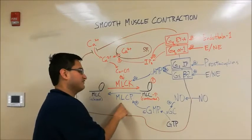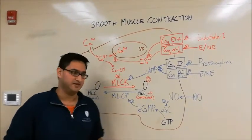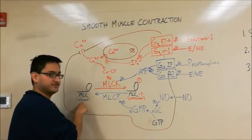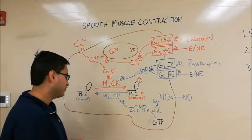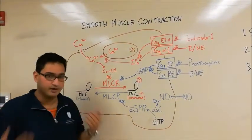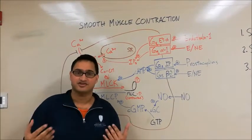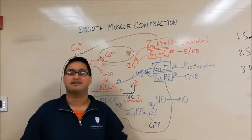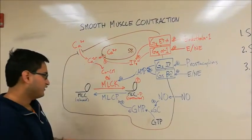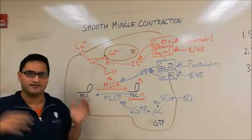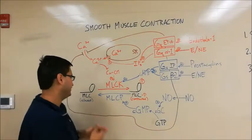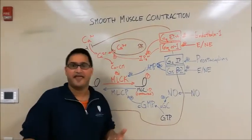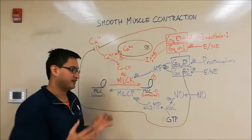Myosin light chain phosphatase, or MLCP, is going to undo the work of MLCK and turn myosin back to the unphosphorylated and relaxed state. Therefore, MLCP will promote smooth muscle relaxation and vasodilation. Smooth muscle relaxation and vasodilation are intimately related. Now there are a lot of factors that affect the dynamic between the unphosphorylated relaxed state and the phosphorylated contracted state.